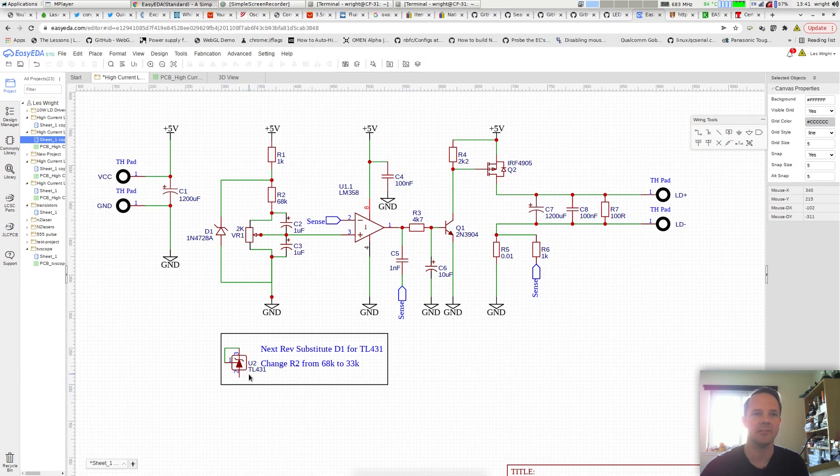So in the next iteration of this, I'll replace it with a TL431 as a voltage reference. I've actually done this in the current board. I just desoldered the original Zener diode and replaced it with a TL431, and it's actually very stable. That's pretty much all there is to it. We'll take a look at the PCB real quick.